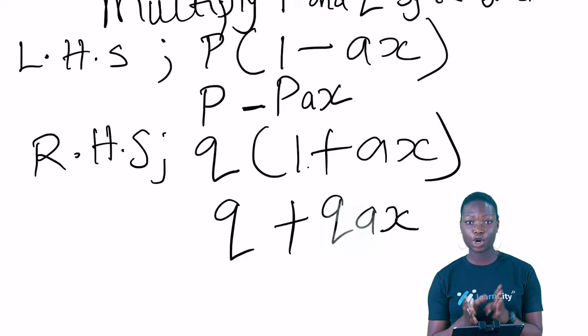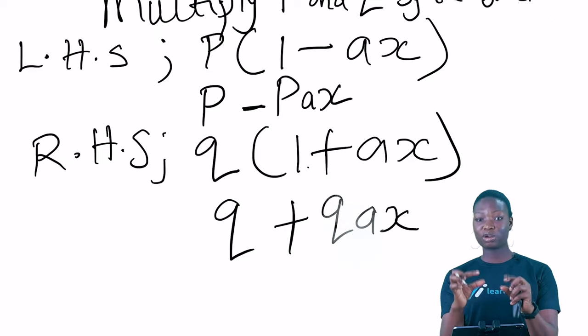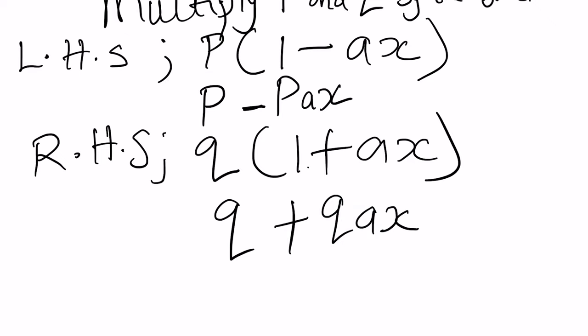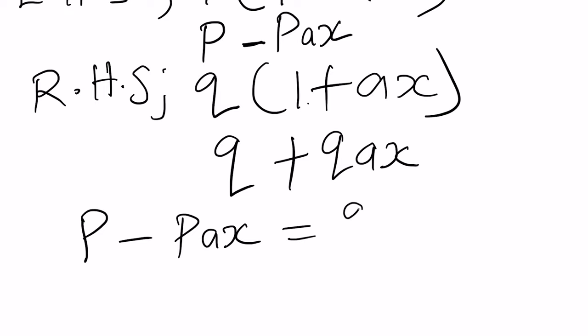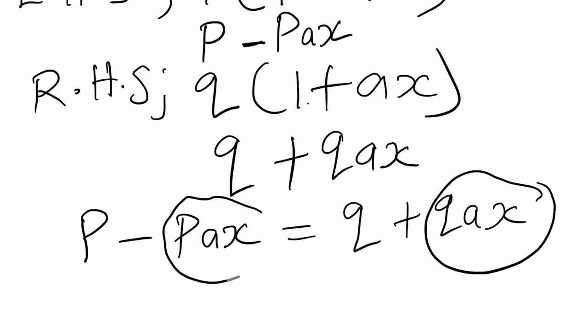We've now expanded both sides and removed the brackets. Our equation becomes: p - pax = q + qax. We must not forget that we are making x the subject of the relation. We have x appearing on both sides, so we need to collect all x terms together to get a single x — not x squared, not 2x, just x.